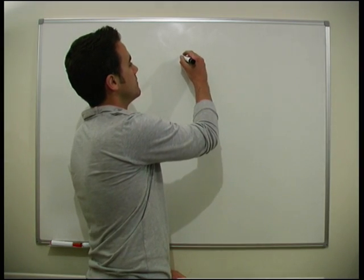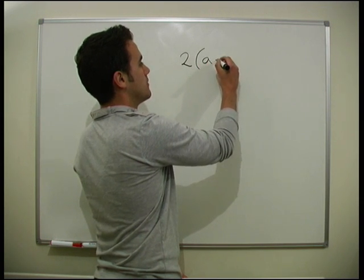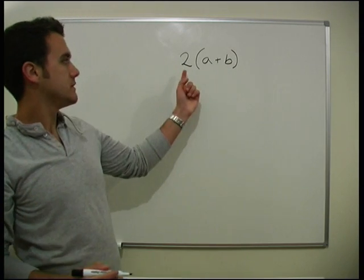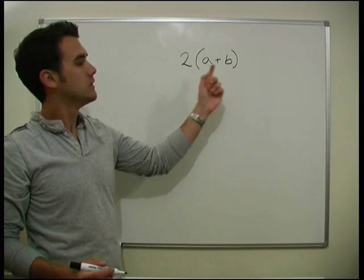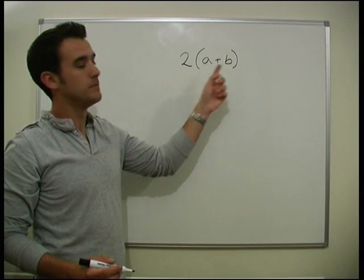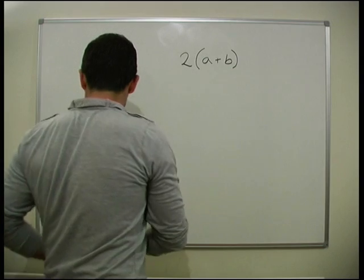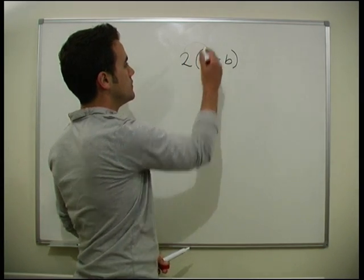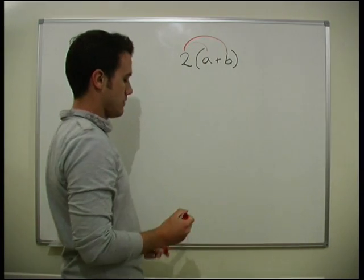So, one thing we could see written would be 2 times a plus b. So, this bracket tells us that this is going to be done first. 2 tells us it's got to times a and the b. 2 is times by everything in the bracket. So, we do that. First we do 2 times the a, and then we do 2 times the b.